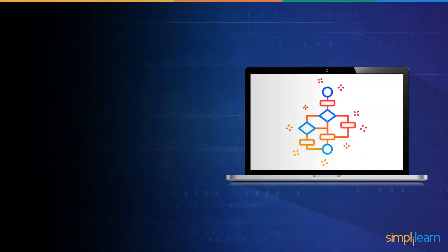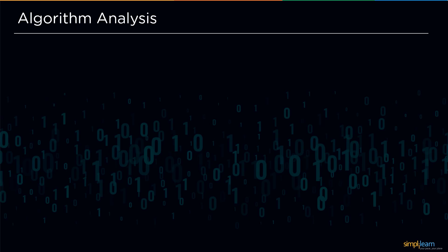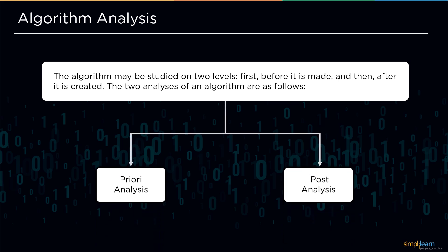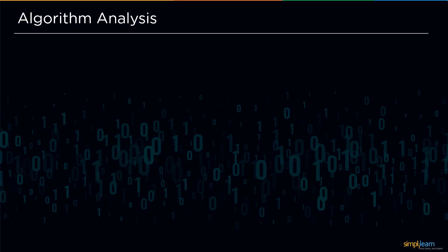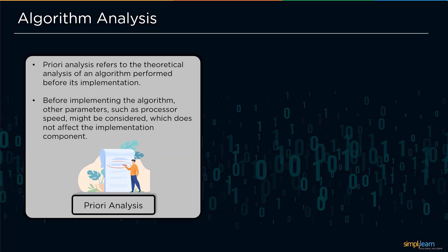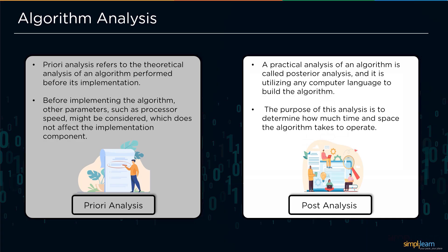After discussing these solutions we will move ahead and understand algorithm analysis. The algorithm may be studied in two levels: first before it is made, and then after it is created. The two analyses of an algorithm are priority analysis and post analysis. Priori analysis refers to the theoretical analysis of an algorithm performed before its implementation. Before implementing the algorithm, other parameters such as processor speed might be considered which does not affect the implementation component. Next we have posterior analysis. A practical analysis of an algorithm is called posterior analysis and it utilizes any computer language to build the algorithm. The purpose of this analysis is to determine how much time and space the algorithm takes to operate.